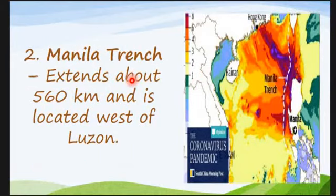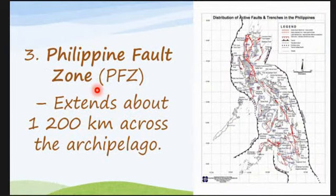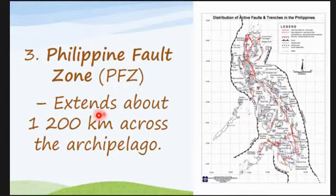Next earthquake generator is the Manila Trench, which extends about 560 kilometers and is located west of Luzon — on the left side of the map. And third, we have what we call the Philippine Fault Zone, represented by the red lines visible across the islands. It extends about 1,200 kilometers across the archipelago.